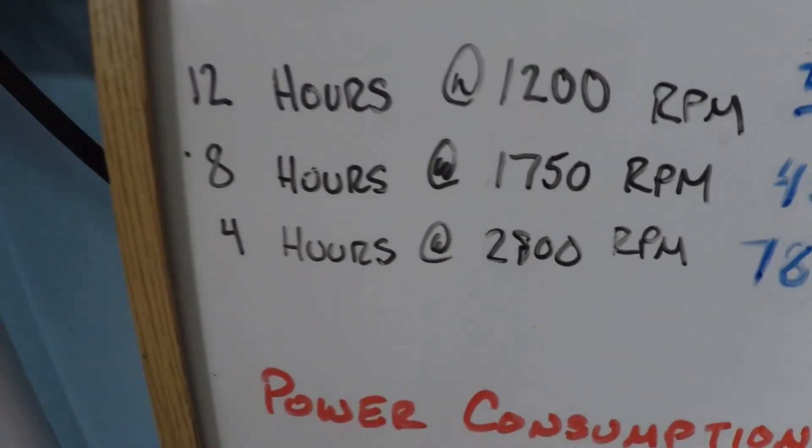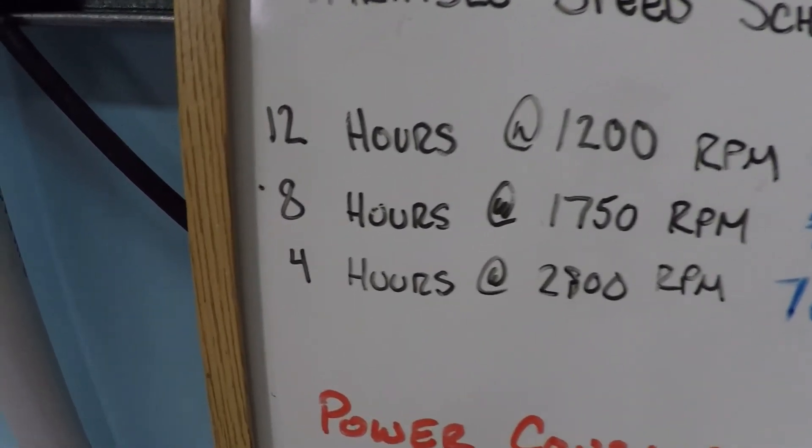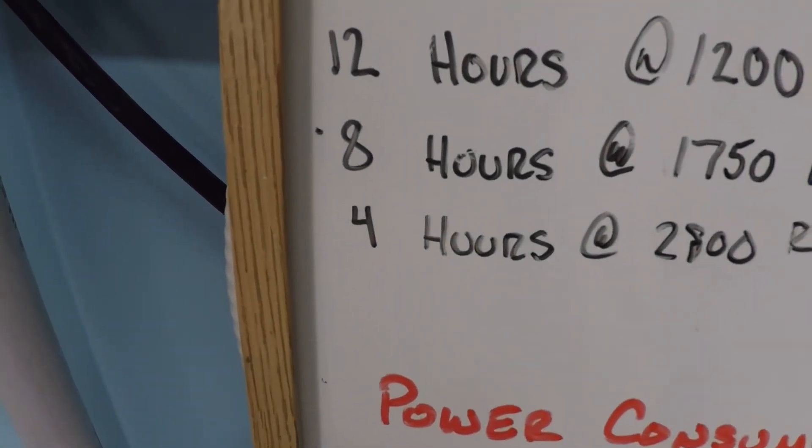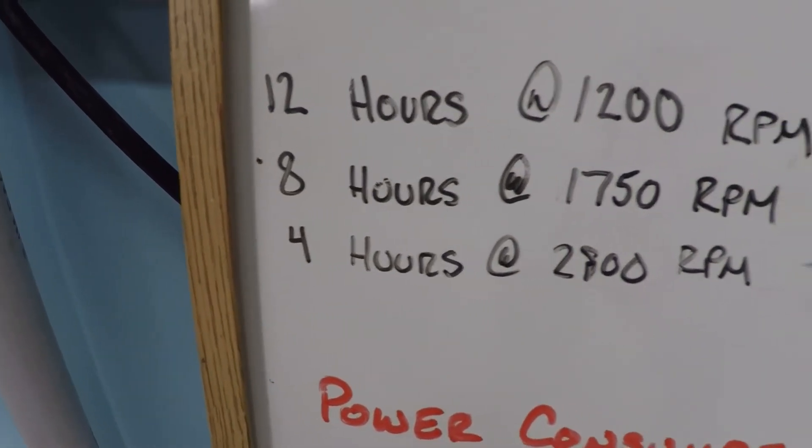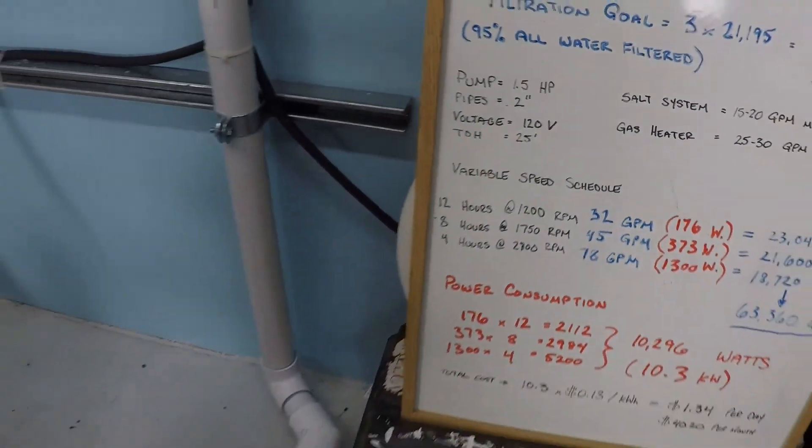And so that's why you see this number at 2800 RPM and not 3000 or 3450. So in this example we're going to have our high periods of time, four hours at 2800 RPM. We should be able to get about 78 gallons per minute.